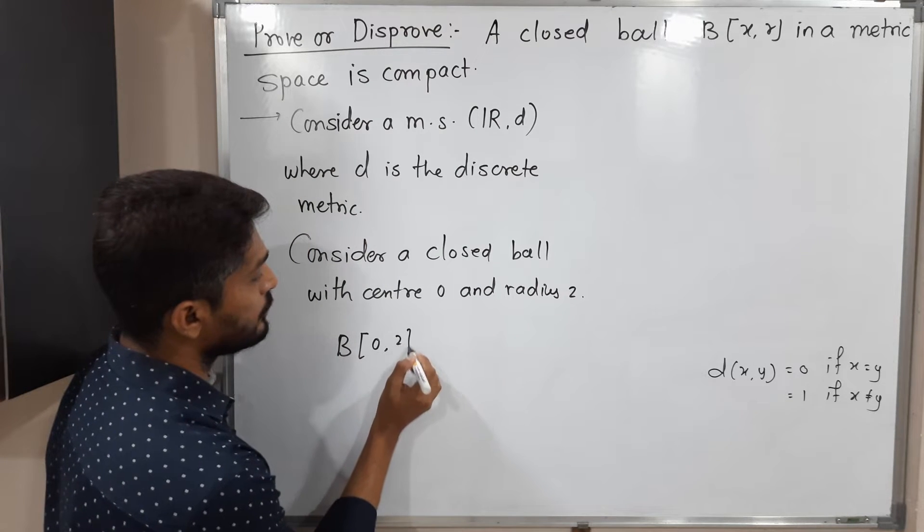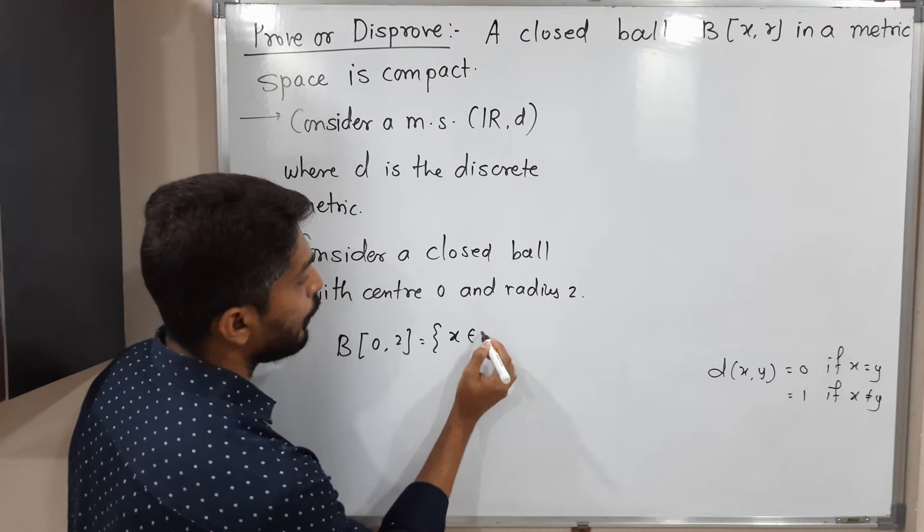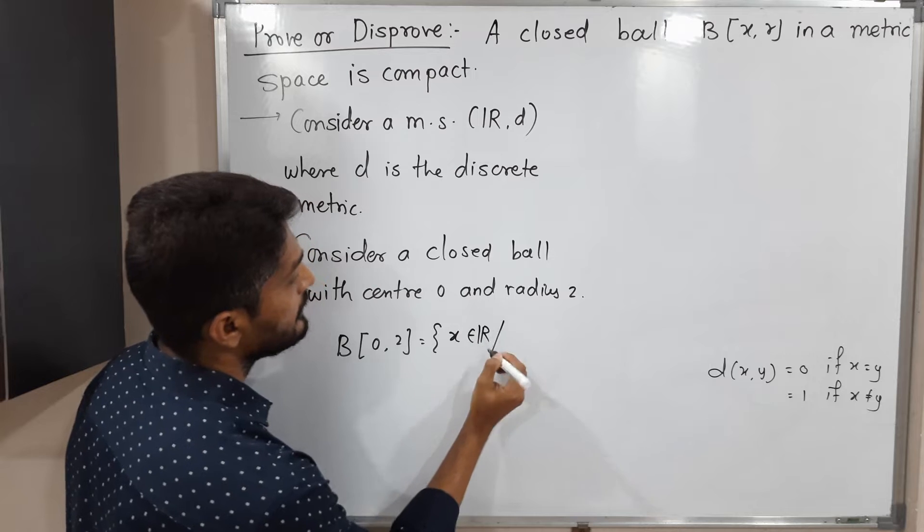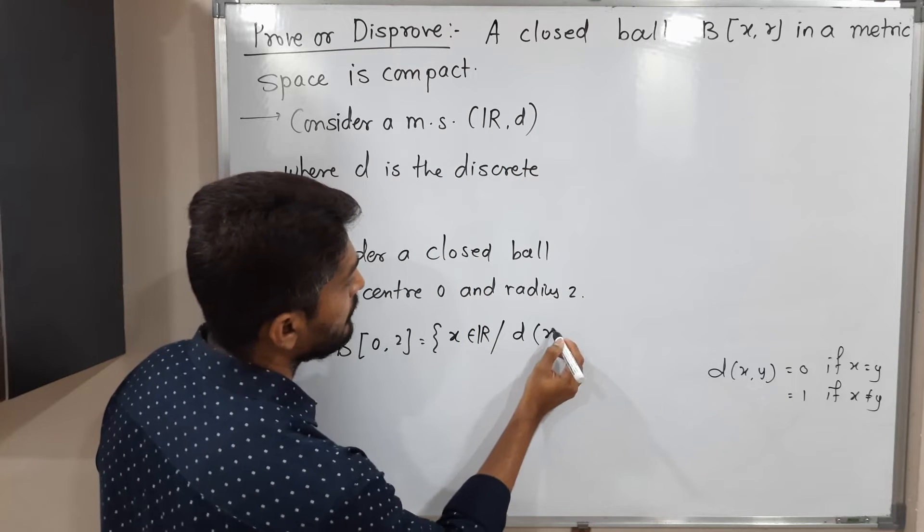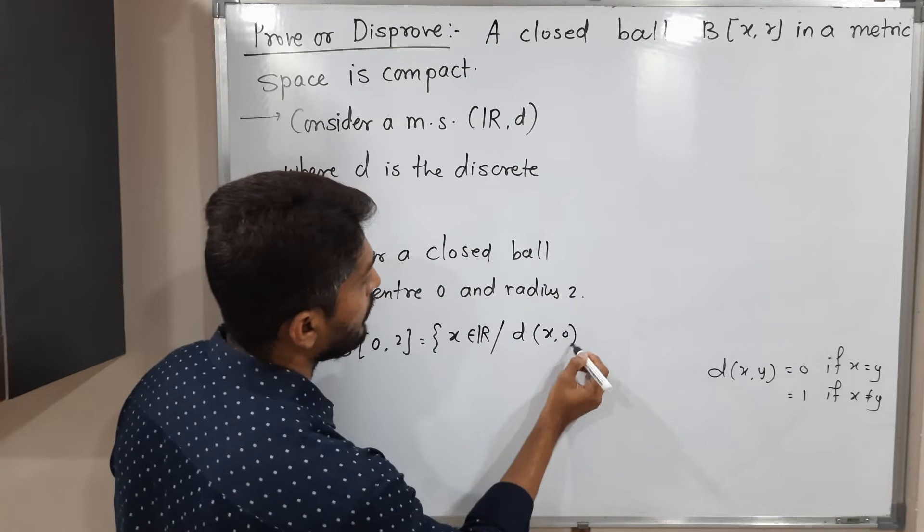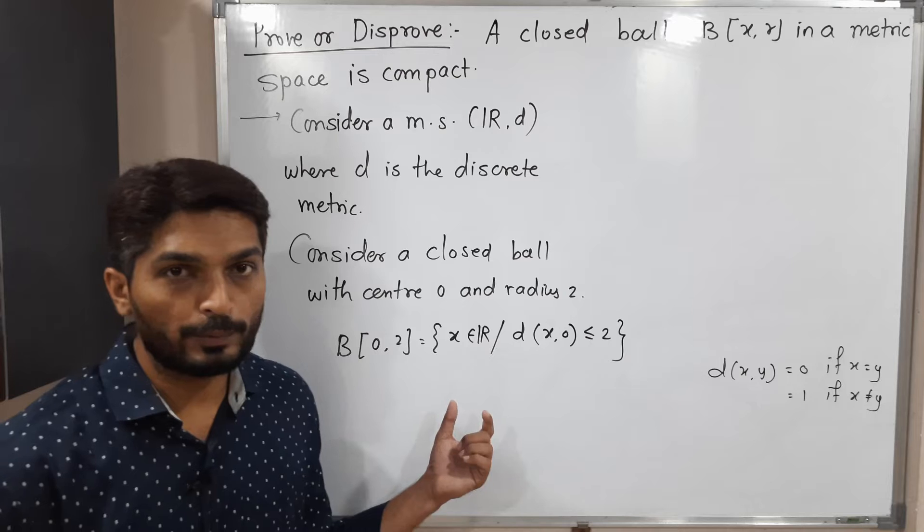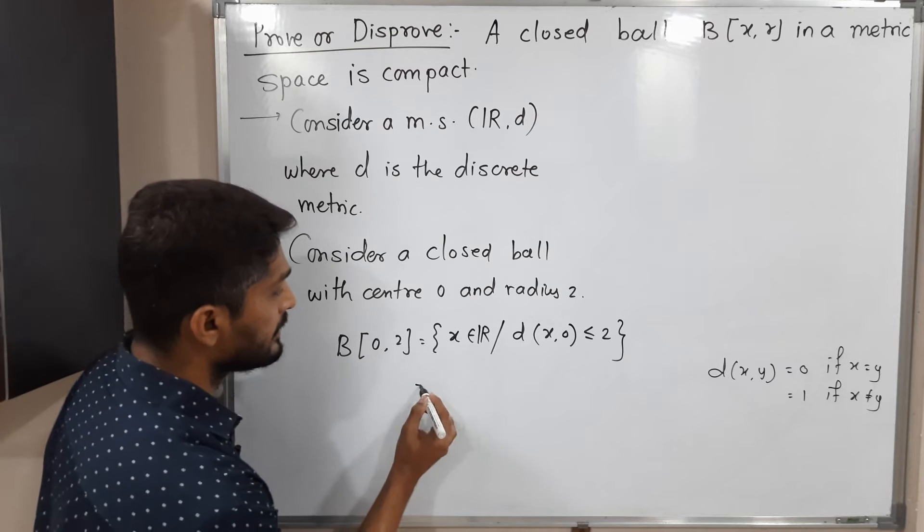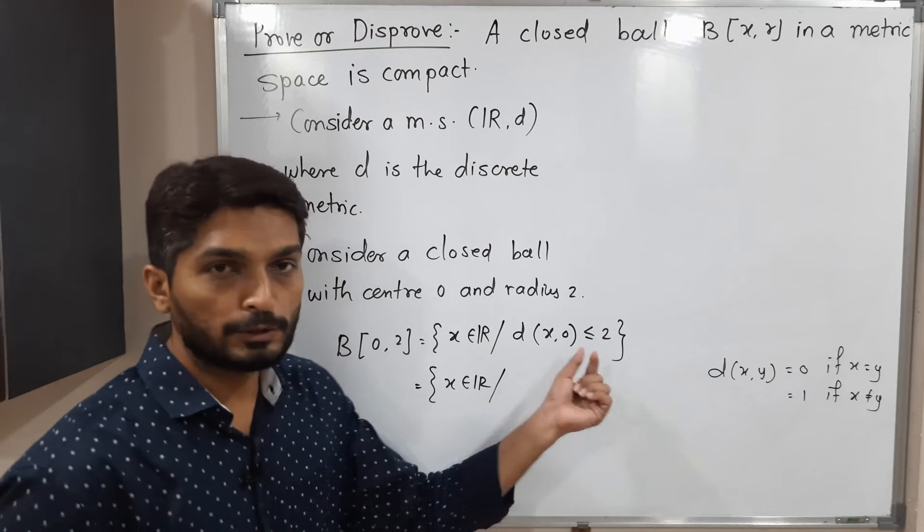So let us find that closed ball with center 0 and radius 2. The definition of closed ball says x belongs to R such that the distance between x and the center of the ball is less than or equal to 2.